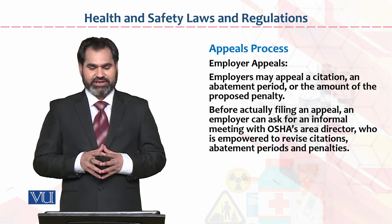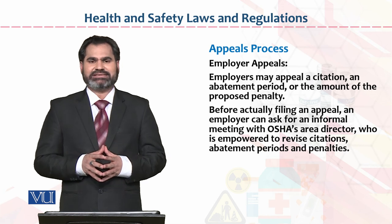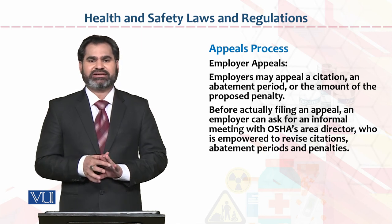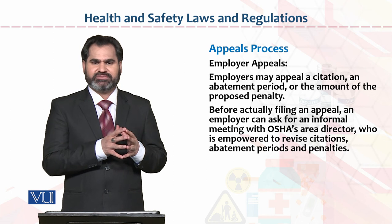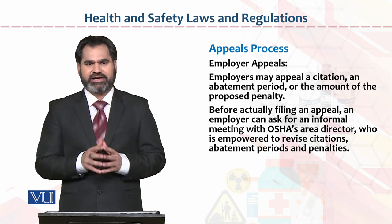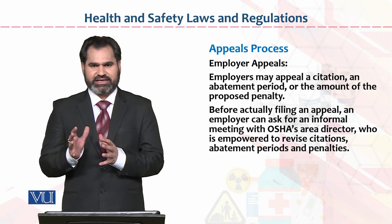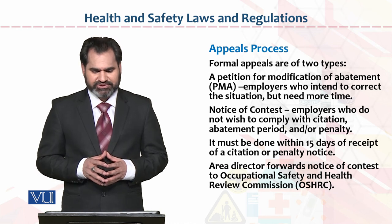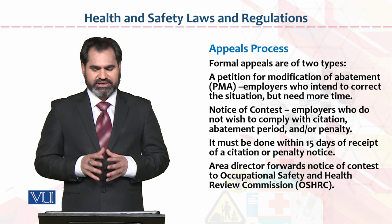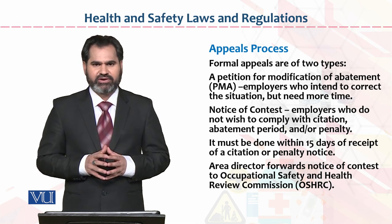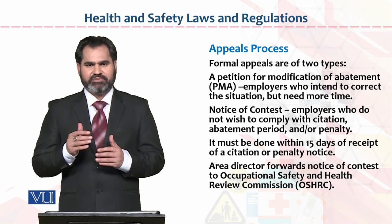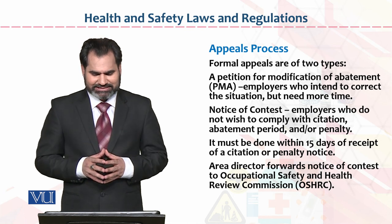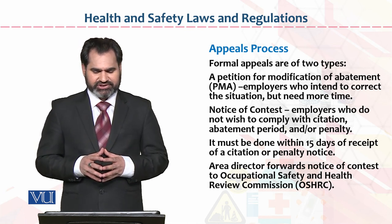An employer may appeal a citation, abatement period, or the amount of the proposed penalty — against the penalty, against the time, or raise objections to the decision. A new team, separate from the team that made the first visit, can visit after that period and submit their report. Formal appeals are of two types: first, a petition for modification of abatement, which means the decision has already been made and a team can come to modify it or the employer can negotiate a new decision.